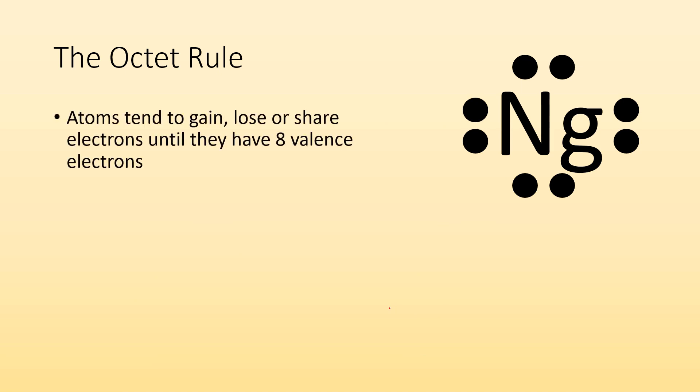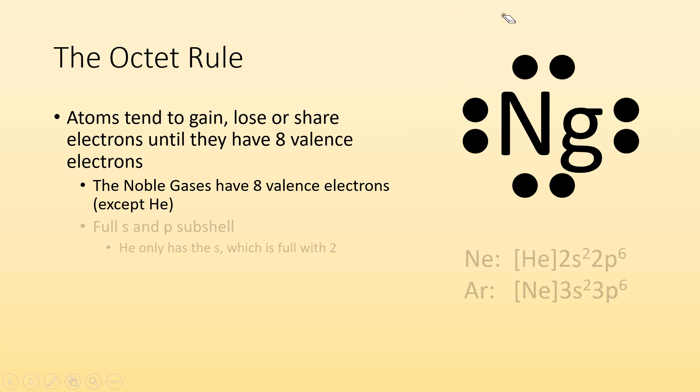So the octet rule. Atoms tend to gain or lose or share electrons until they have eight valence electrons. So now noble gases have eight valence electrons, except for helium, which only has two.